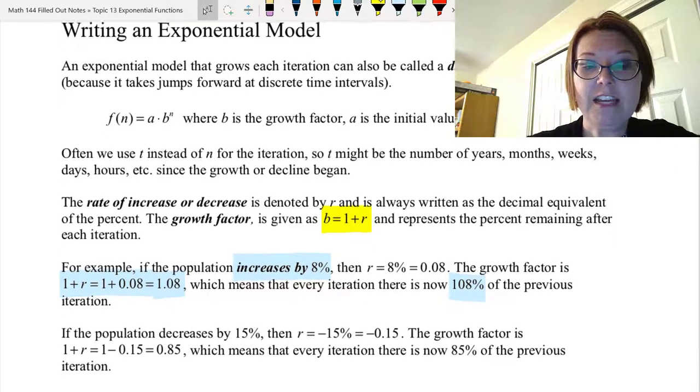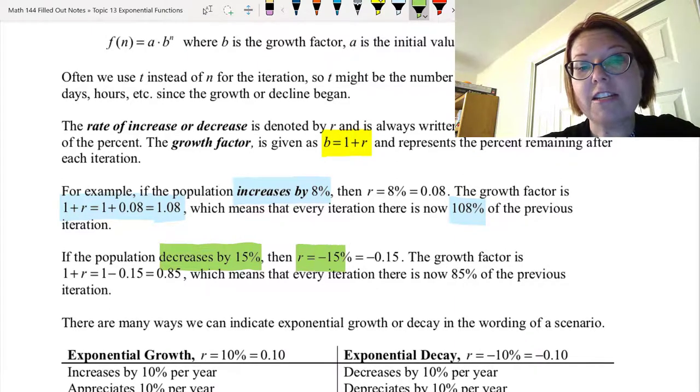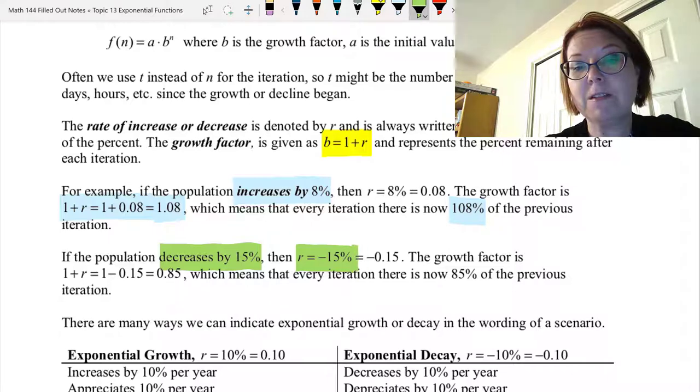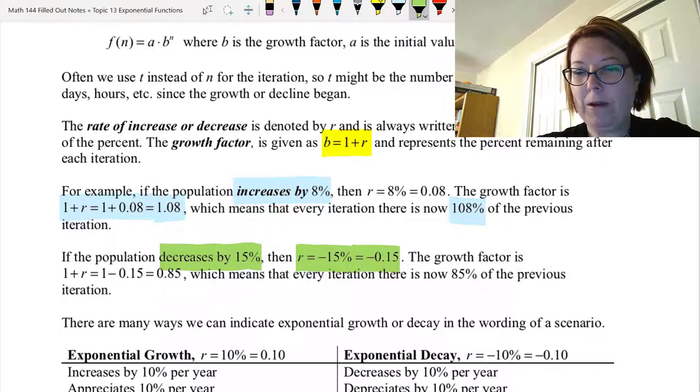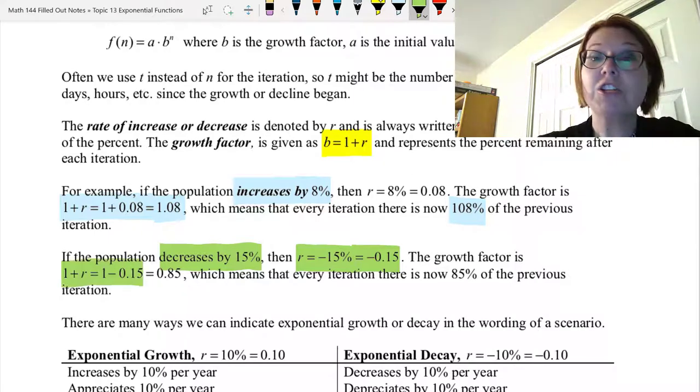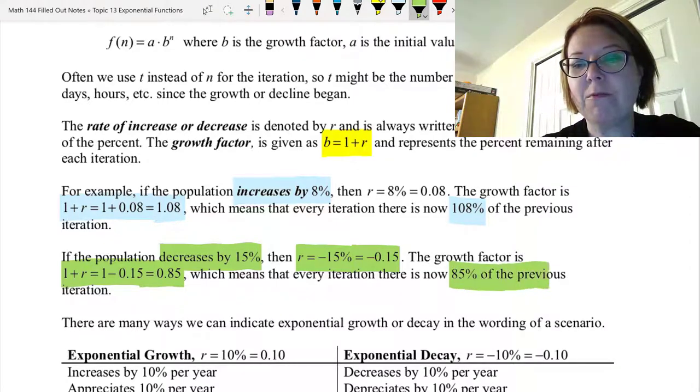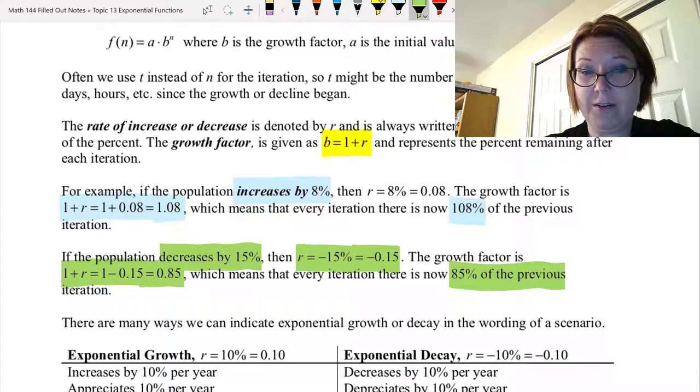Now on the other hand, if the population decreases by say 15%, then r is actually negative. It's negative 15%, or negative 0.15. That means the growth factor we would calculate by doing 1 plus r, which in this case would be 1 plus negative 0.15, or 1 minus 0.15, and that gives us 0.85. Which means that every iteration, there's 85% of the previous iteration there.